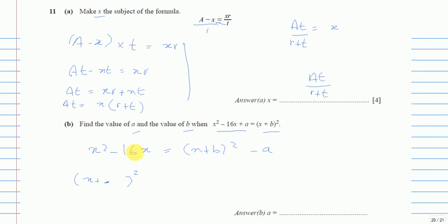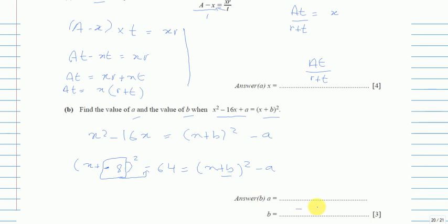We take half of 16, which is 8. Then the root of this number—outside there is always a minus sign—and outside I take the square of 8, which is 64, and the rest is exactly the same thing. In this position is my b, which is -8.